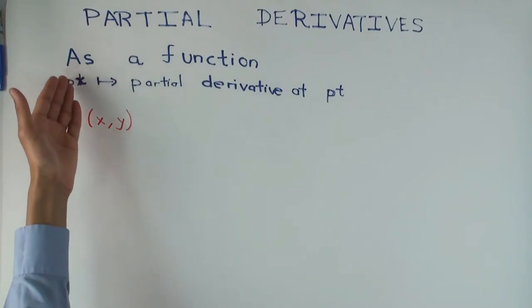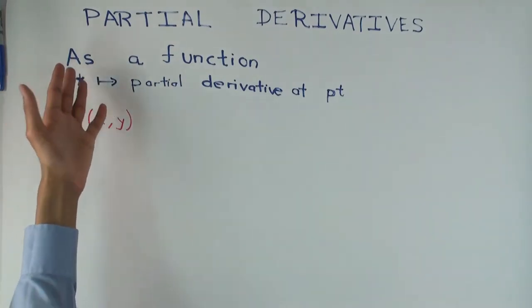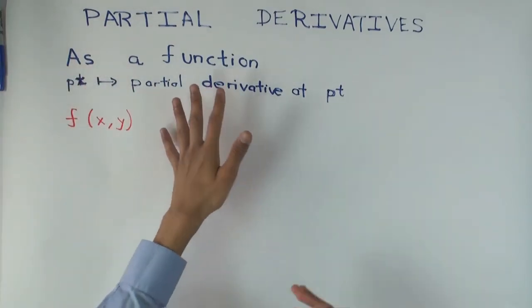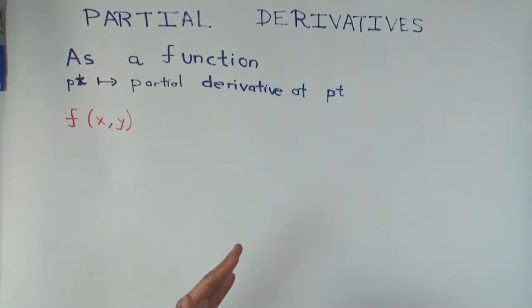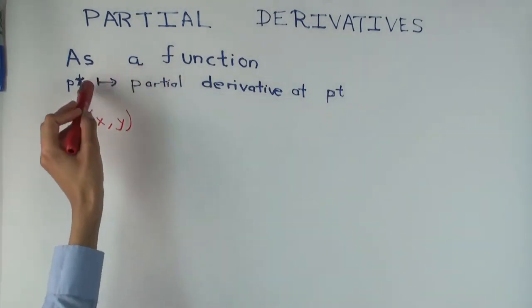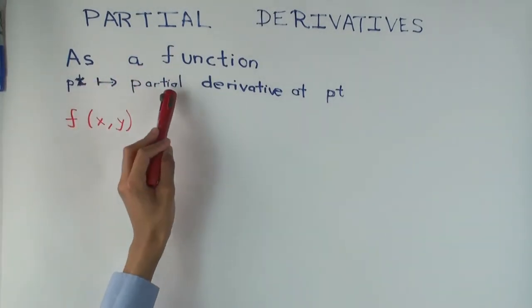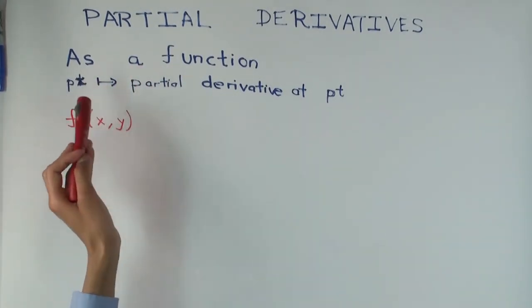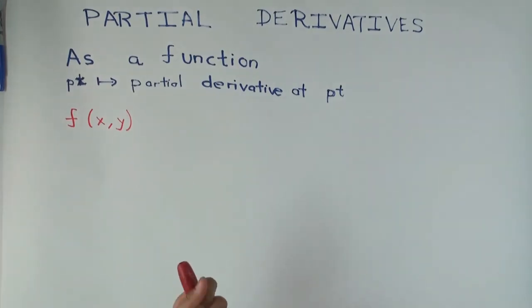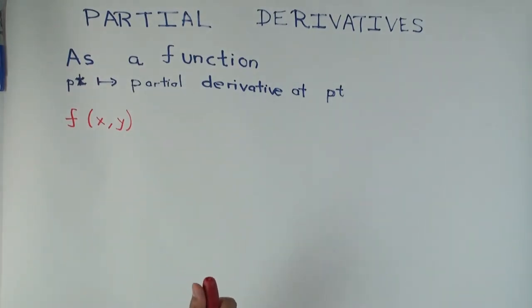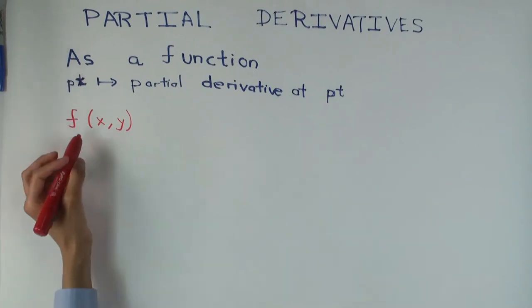Secondly, the domain of the partial derivative is contained inside the domain of the function. You could have a situation where the partial derivative doesn't exist at some point where the function exists, because that limit doesn't make sense.